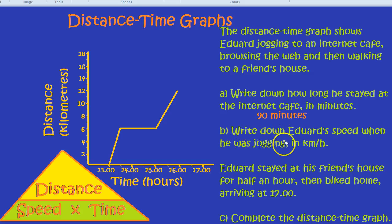What was his distance when he was jogging? Well, his distance was from zero to six. So, his distance was six kilometers. Six kilometers. What was his time? Well, his time was half an hour.